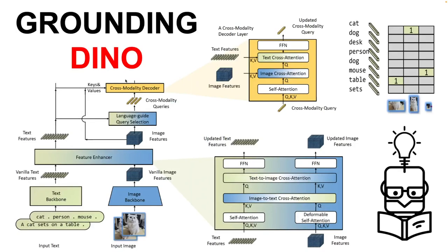Hi everyone, and welcome to the last part in the object detection series. In this video, I would like to talk a little bit about a trend that is happening right now in deep learning, namely the fusion of different modalities, which obviously has been affecting the object detection field as well. As a study case, we are going to take a look at the Grounding DINO model.